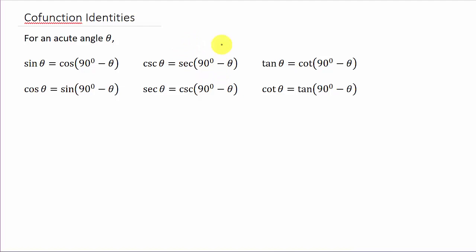These all work the same if you had it in radians. Sine theta equals cosine of pi over 2 minus theta. Instead of 90 degrees you would use pi over 2.